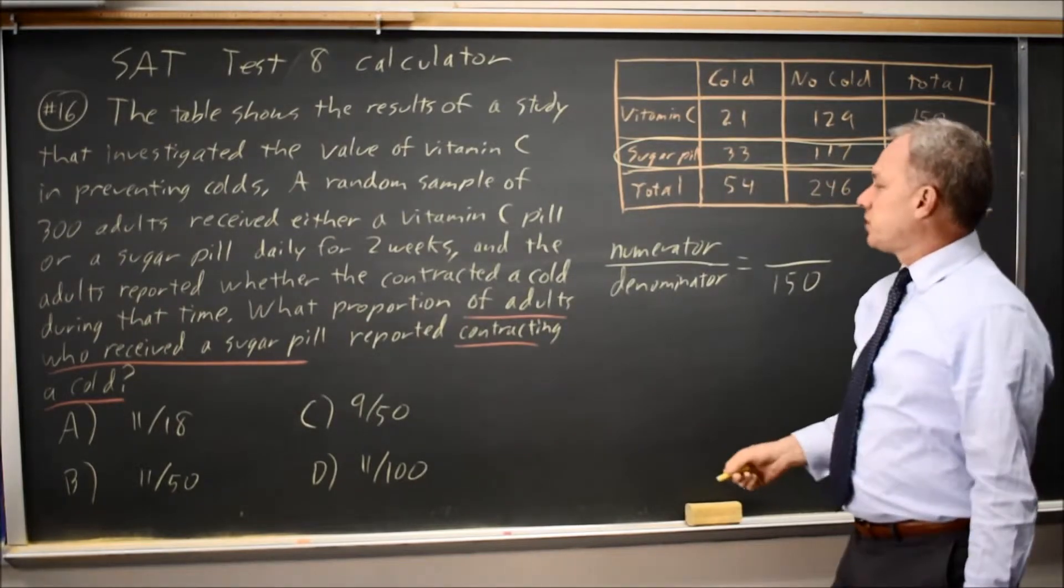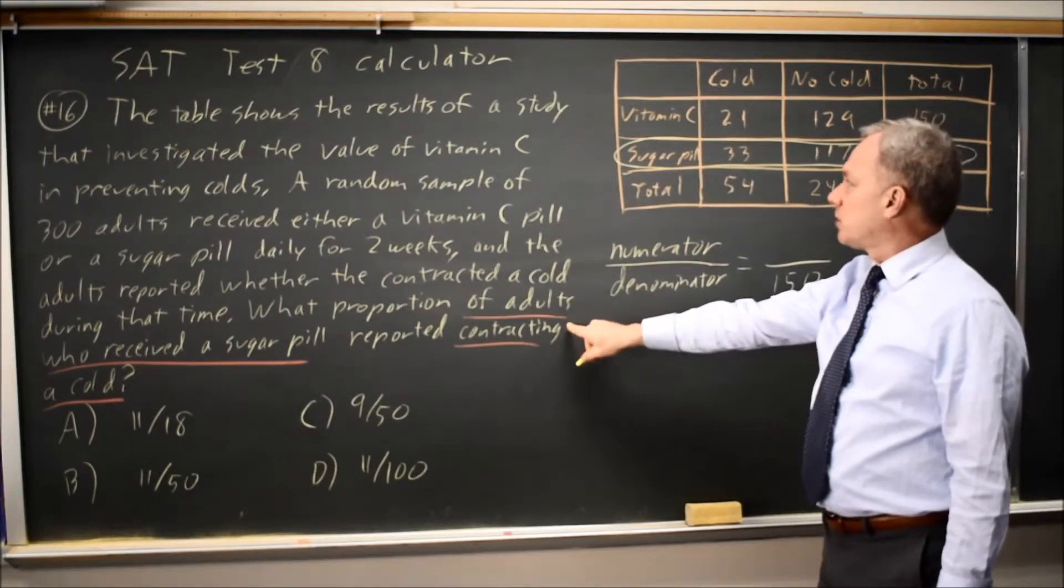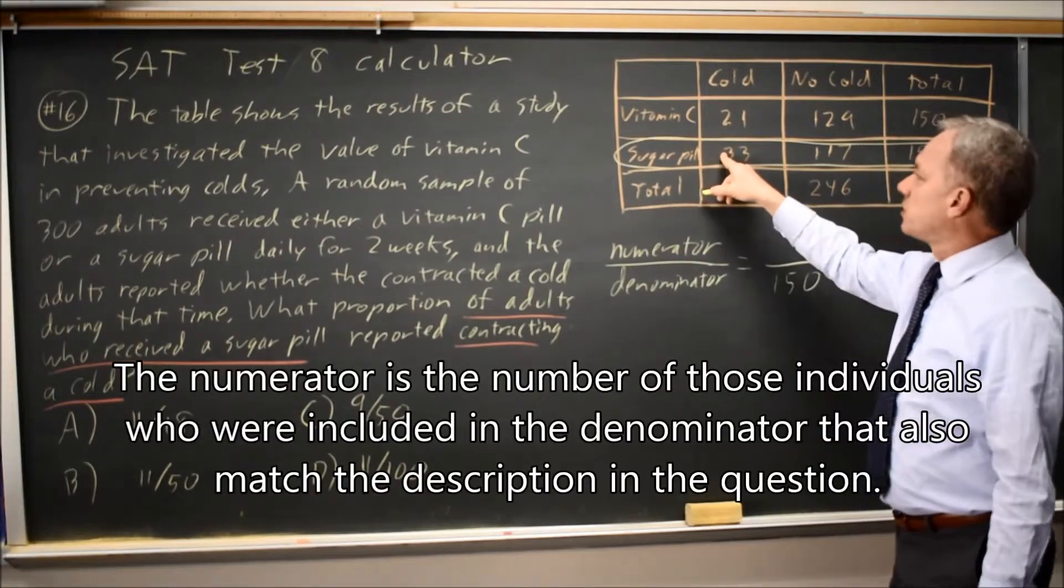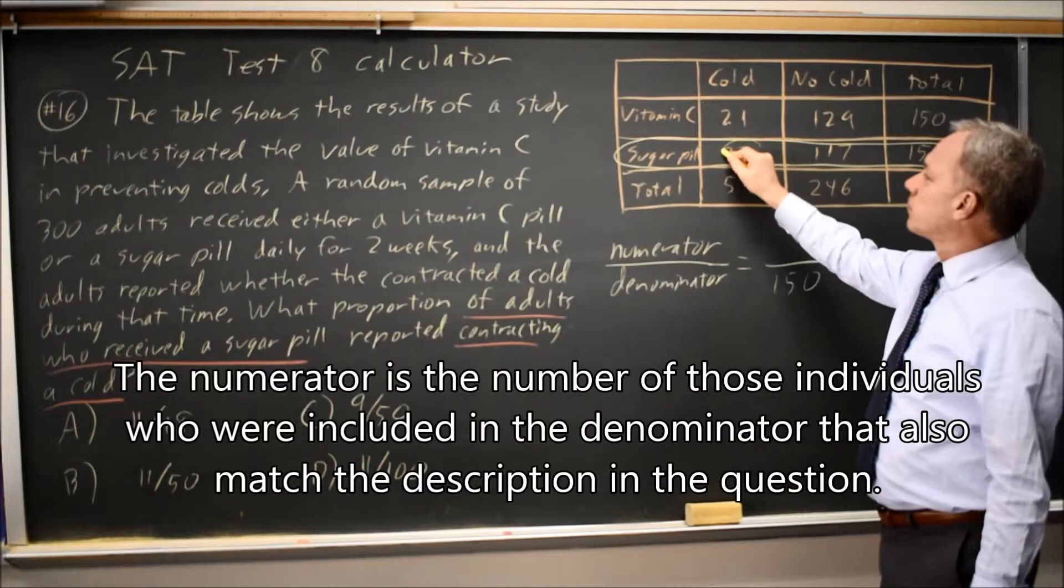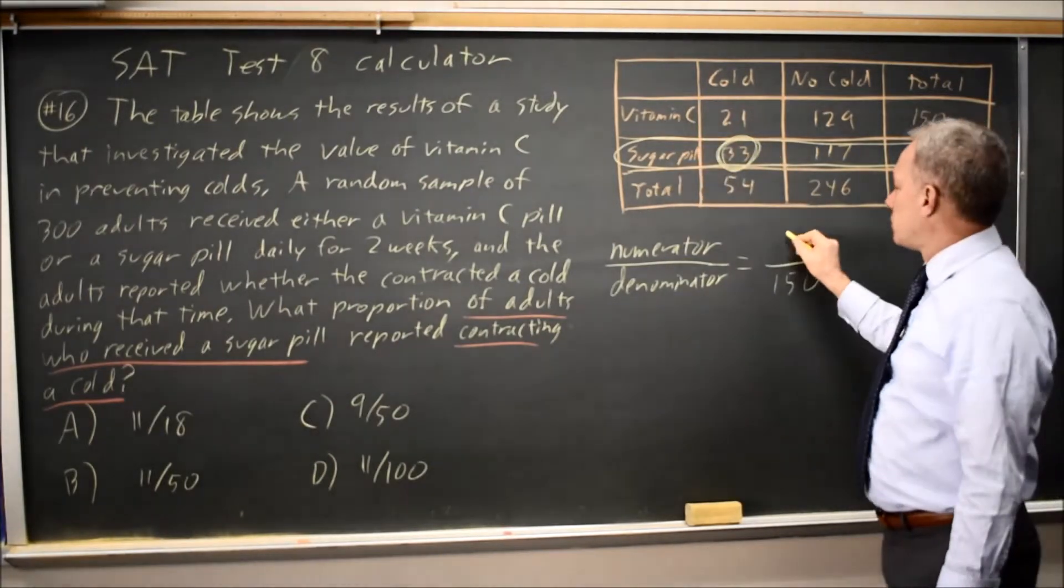Then the question is, of those 150, so only this row, how many reported contracting a cold? That would be the 33 contracting a cold and receiving a sugar pill.